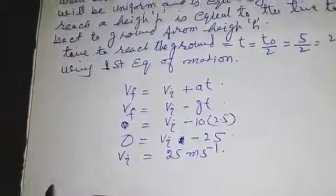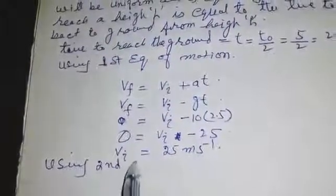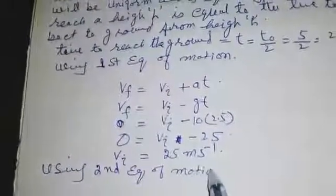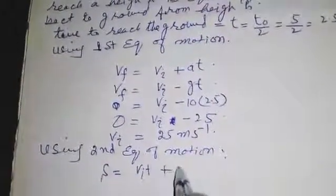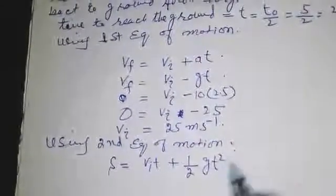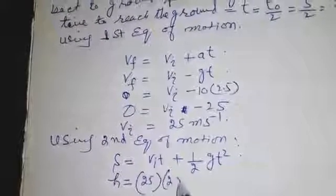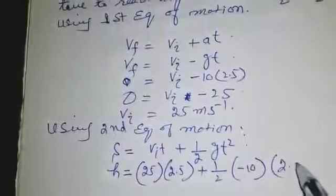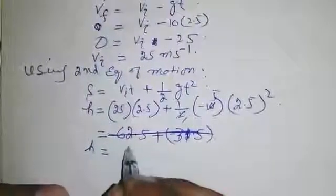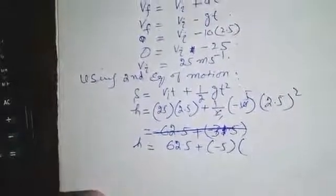Now we are using second equation of motion. s = vᵢt + ½gt². Height h is equal to 25 into 2.5 plus ½ into -10 into 2.5 squared. h is equal to 62.5 plus -5 into 6.25.